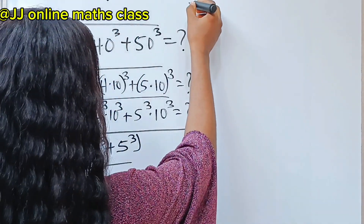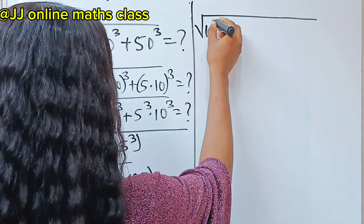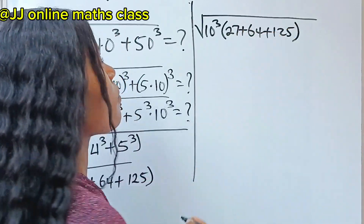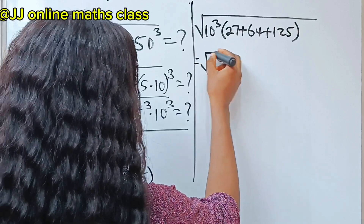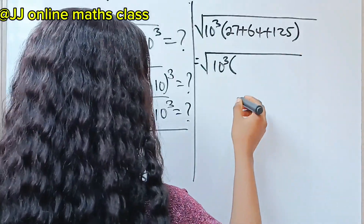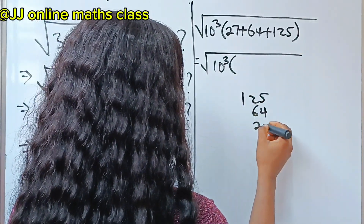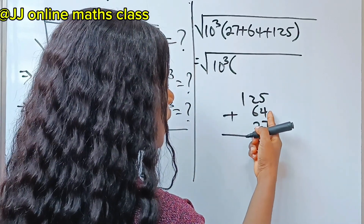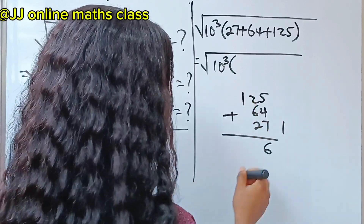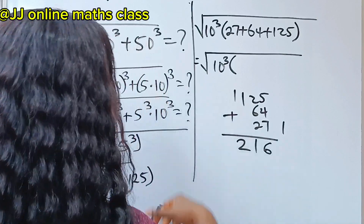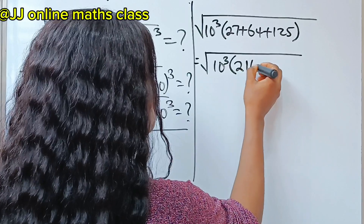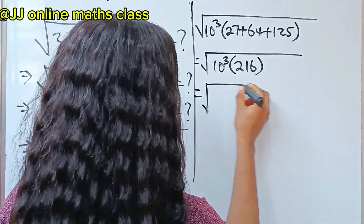So this is where we are: the square root of 10 to the power of 3, bracket 27 plus 64 plus 125. Now this is equal to square root of 10 to the power of 3 multiplied by — let's add: 125 plus 64 plus 27. 5 plus 4 plus 7 is 16, carry 1; then we get 216. So this is square root of 10 to the power of 3 multiplied by 216.